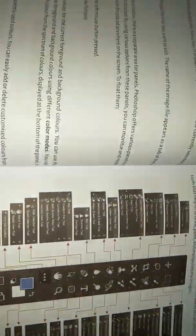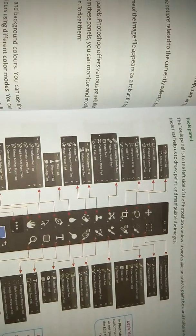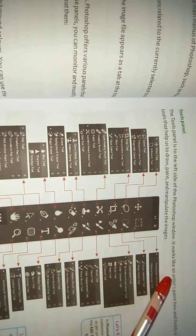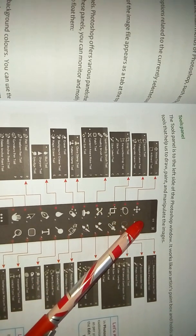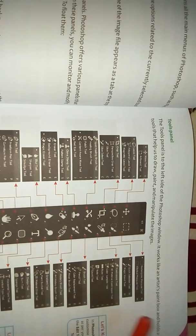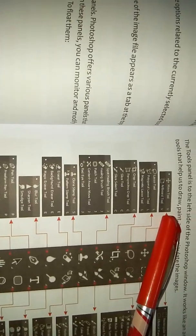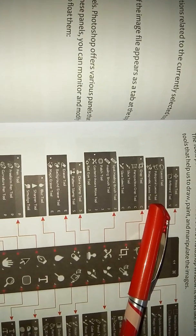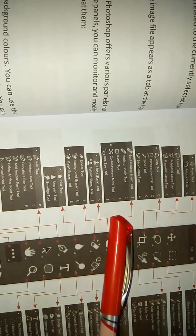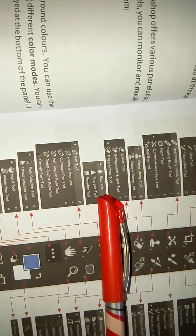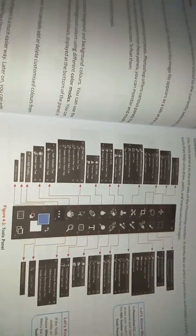Next is the Tools panel. As you can see in the image, the tools panel has lots of tools. The tools panel is on the left side of the Photoshop window. It works like an artist's paint box and holds a variety of tools that help us to draw, paint, and manipulate images. Tools include the Move tool, Artboard tool, Lasso tool, Polygonal Lasso tool, Magnetic Lasso tool, Crop tools, Brush tools, Stamp tool, Eraser, and Blur, Sharpen, and Smudge tools. Many of these tools you may already be familiar with from using them on mobile.